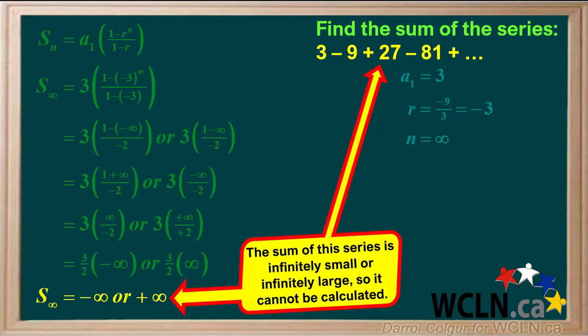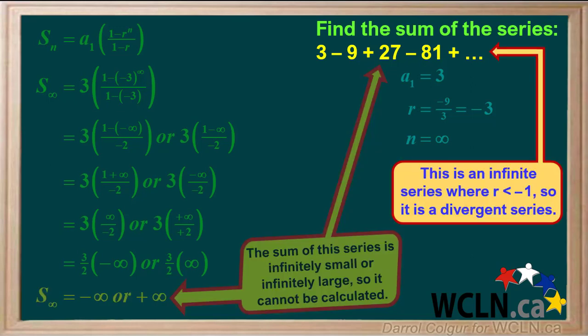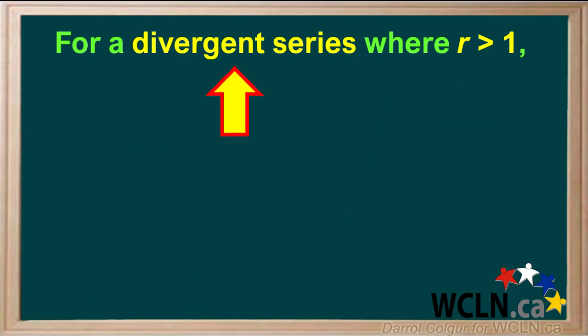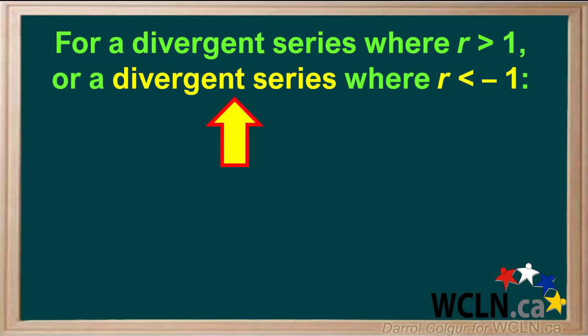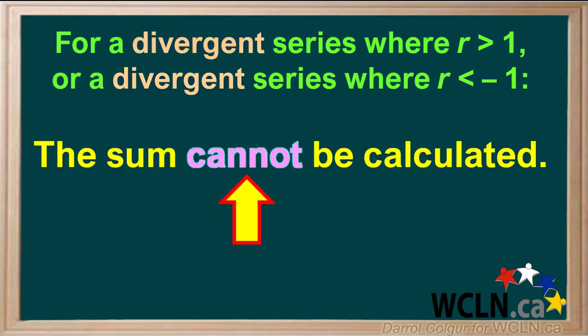Therefore, we can state that the sum of this series is either infinitely small or infinitely large, so it cannot be calculated. Remember, this is an infinite series where r is less than negative 1, so it is a divergent series. We can summarize by stating that for a divergent series where r is greater than 1, or for a divergent series where r is less than negative 1, the sum cannot be calculated.